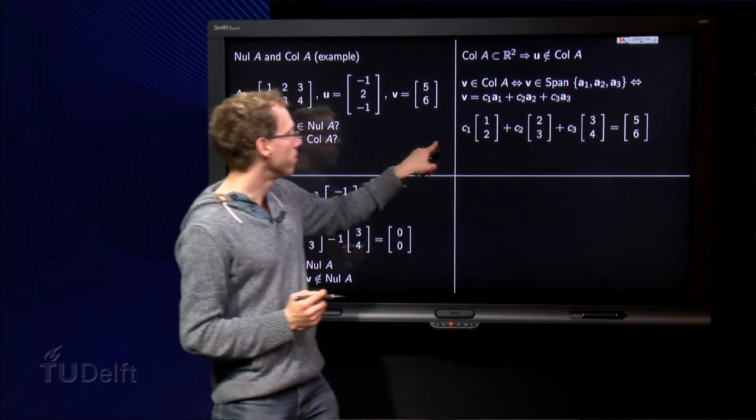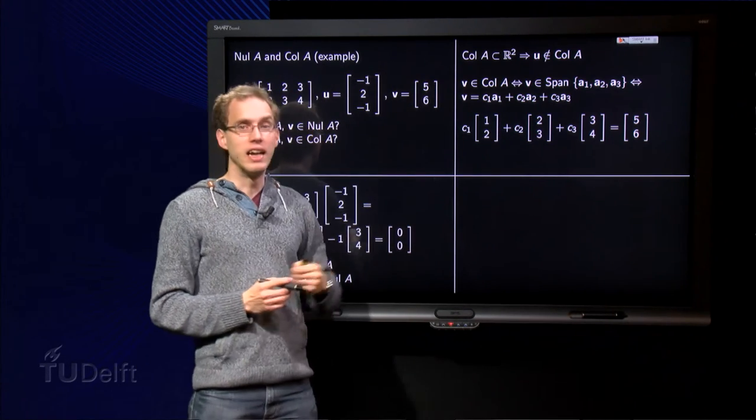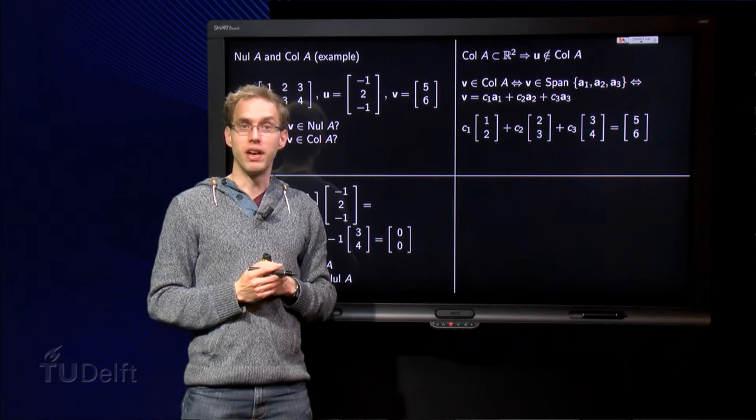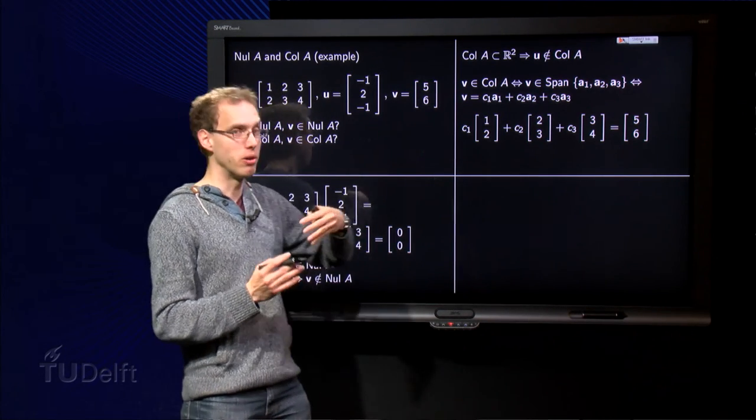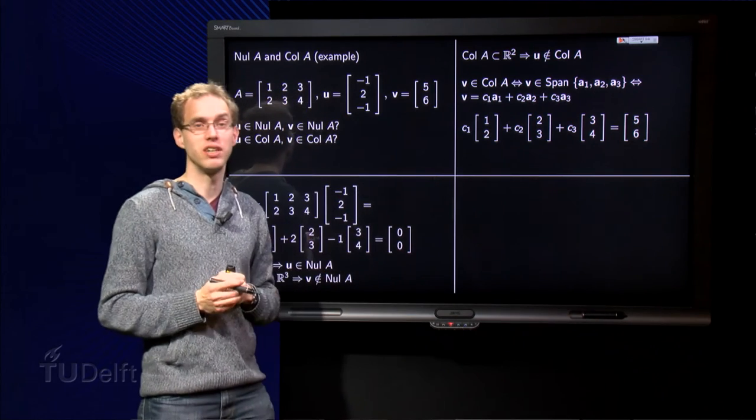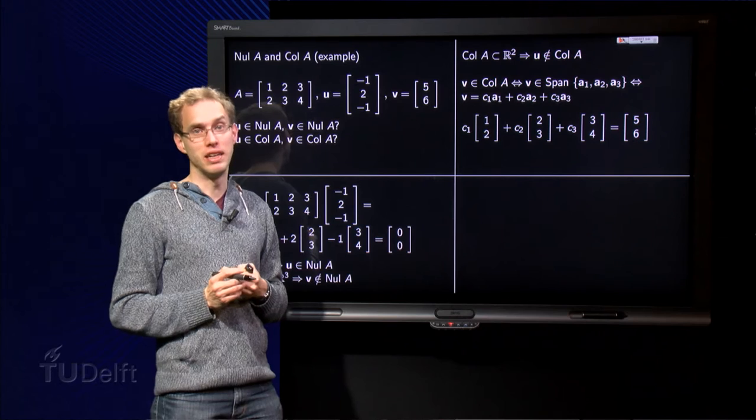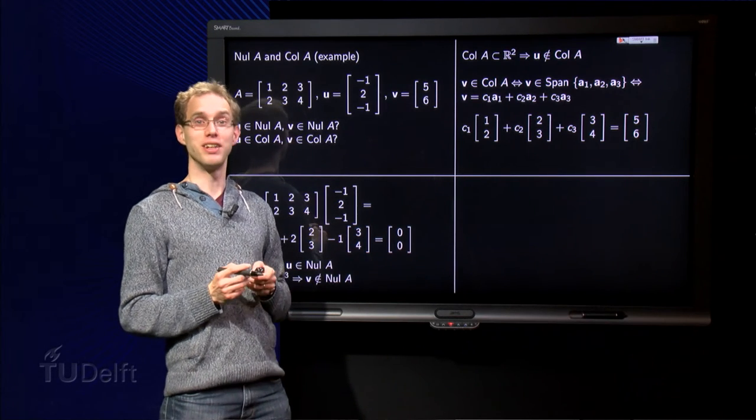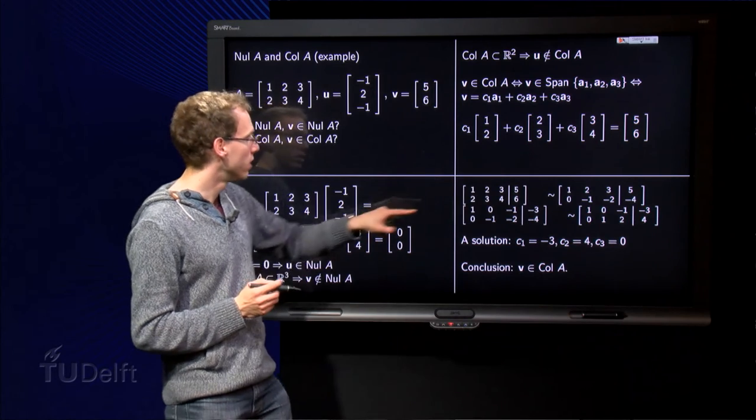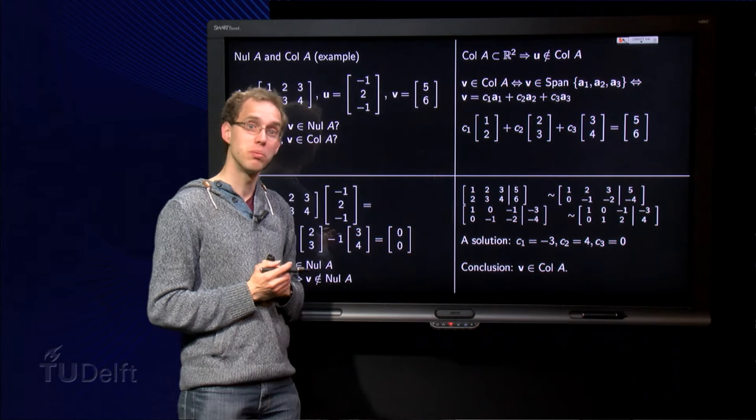Let's see, plug in the numbers. Well, we could try to guess the weights c1, c2 and c3, but we know how to do this. We have a vector equation. A vector equation is equivalent to a linear system, and for a linear system we can use an augmented matrix to find the solution. So here we form our augmented matrix and let's do some row reduction.